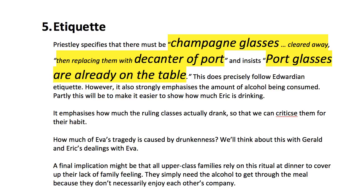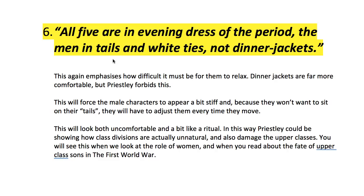A really interesting idea is how Priestley dresses the men. All five characters are in evening dress of the period — the men in tails and white ties, not dinner jackets. This restricts the movements of the actors on stage. They are wearing deeply uncomfortable clothes to eat and relax in. What happens then is everybody looks uncomfortable on stage, which is dramatically important because Priestley is trying to show that the upper classes are not at home in their own skin — not normal like the rest of us.